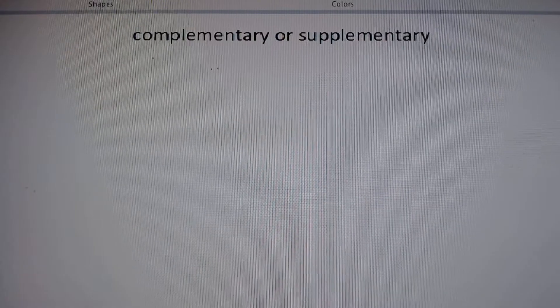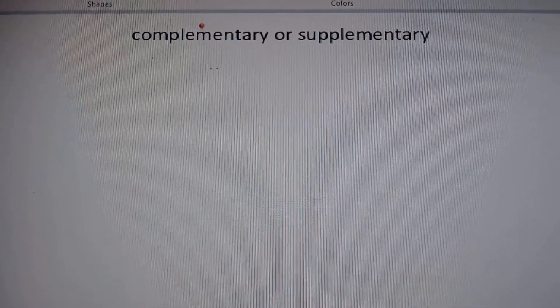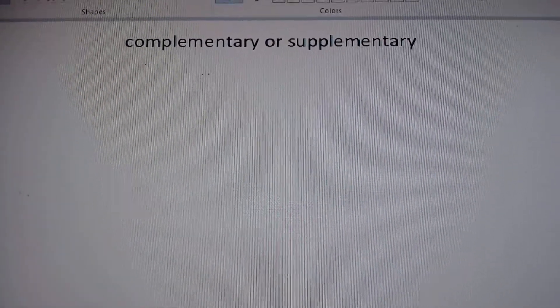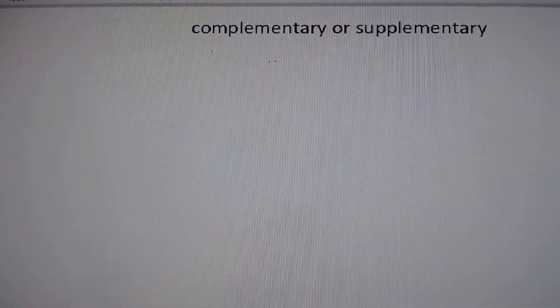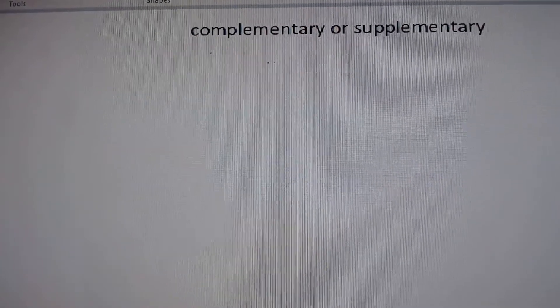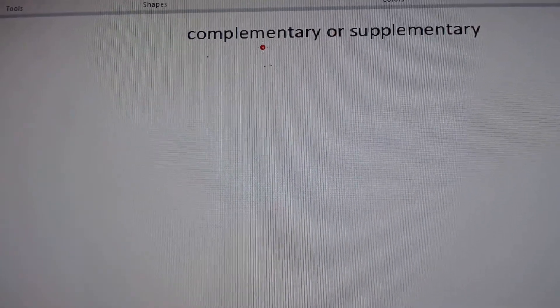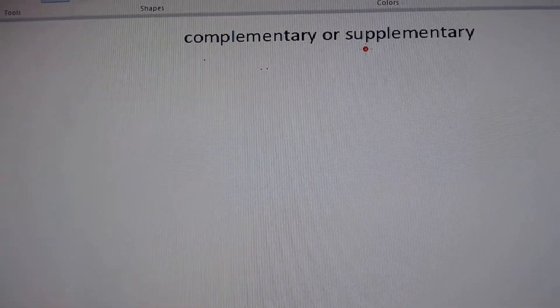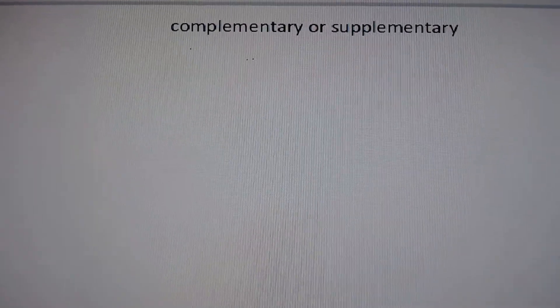Hello, I'm Dr. Hine and welcome to the Math Bunker. Today we're going to go over complementary and supplementary angles. Basically, if you have two angles and you add the measurements together, if the sum is 90 degrees, it's complementary. If the sum is 180 degrees, it's supplementary.